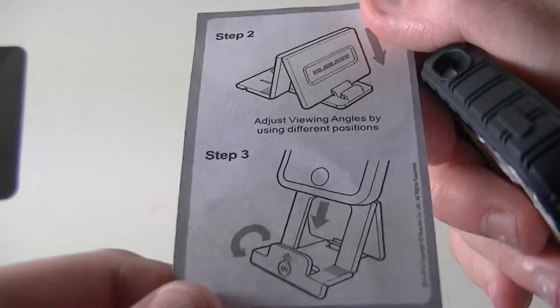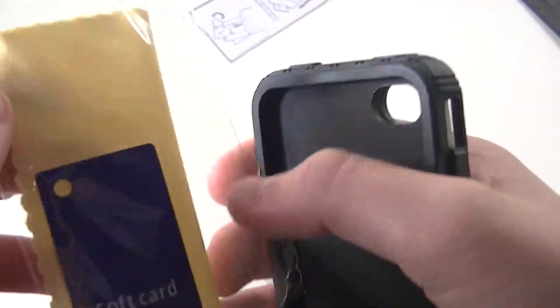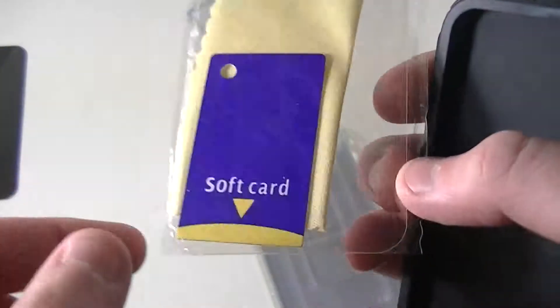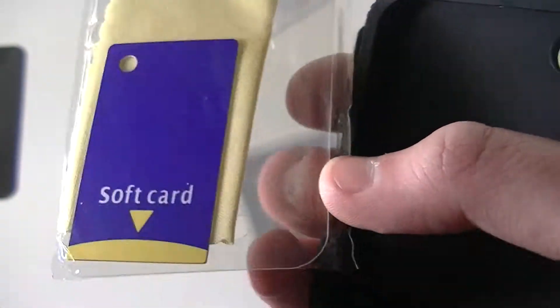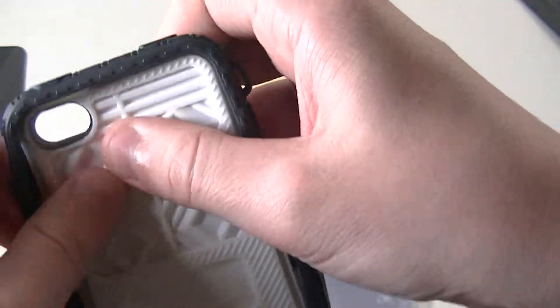They also include some screen protectors, and these are for the iPhone 4 and 4S. It comes with a little microfiber cloth and the little cards you can use to get out the air bubbles. Let's go ahead and take this case apart.